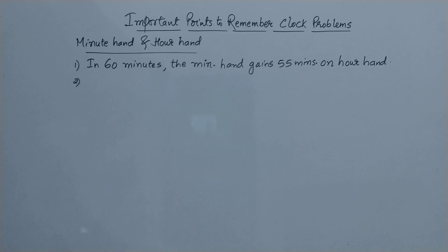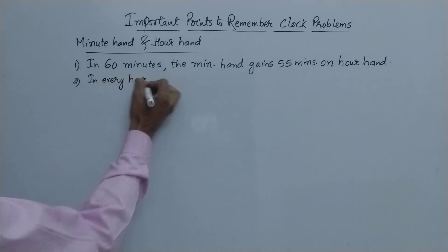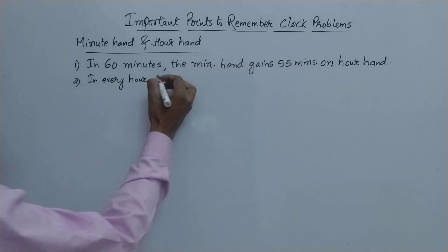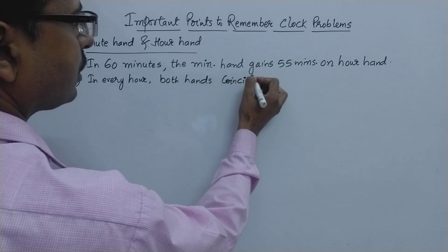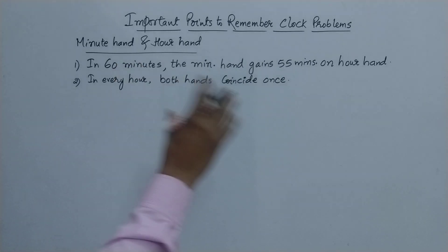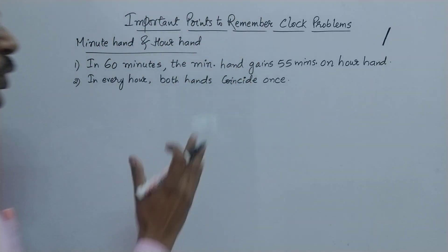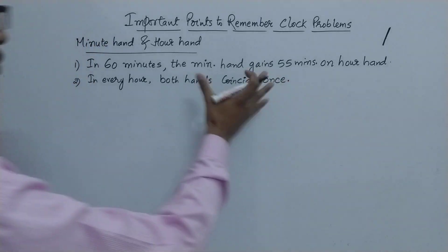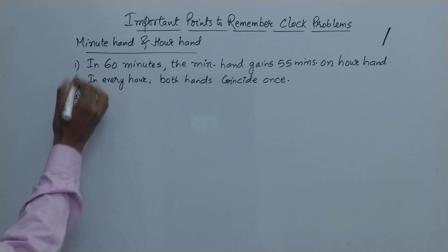Now the second important point: when do the two hands coincide? In every hour, both the hands coincide. There is only one particular instance in one hour that both the minute hand and the hour hand will coincide — meaning they will be one above the other. So coincidence of these two hands occurs only once in every hour. Very important for MCQs.